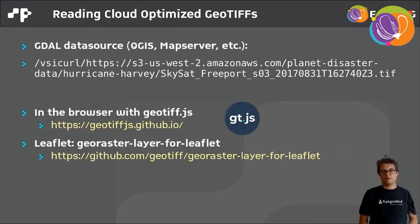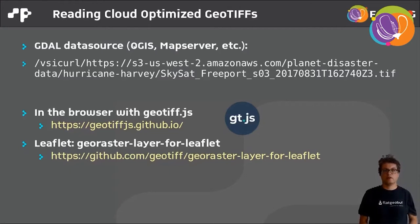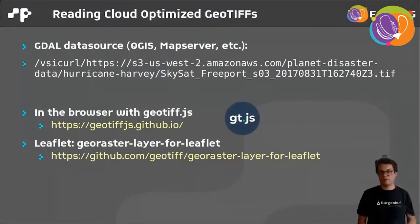How can you read a Cloud Optimized GeoTIFF? First, back on the desktop — some desktop software only supports files. But with GDAL there is a special file path beginning with VSI curl, which looks like a local file to the client but in reality is an HTTP request, in this case to a Cloud Optimized GeoTIFF. So you can just replace file paths — for instance in QGIS or MapServer — with a COG read over HTTP. In the browser you can read it directly. There is GeoTIFF.js, a good library for reading GeoTIFFs and cloud-optimized GeoTIFFs. For Leaflet there is an additional plugin, the GeoRaster layer for Leaflet, which also supports the COG format.